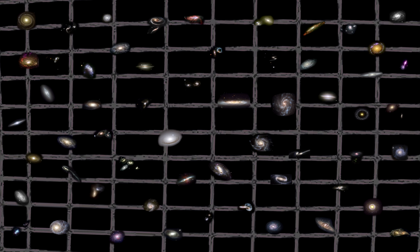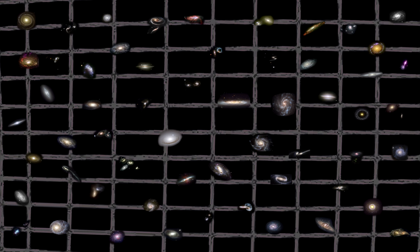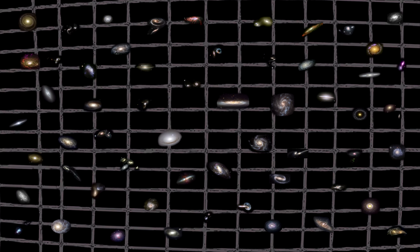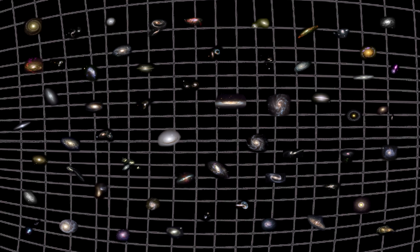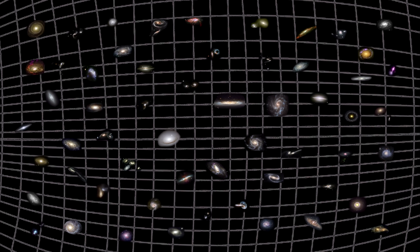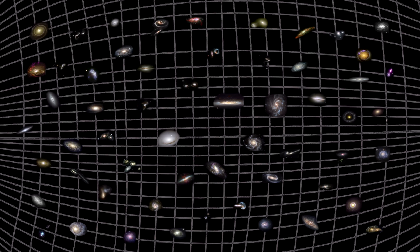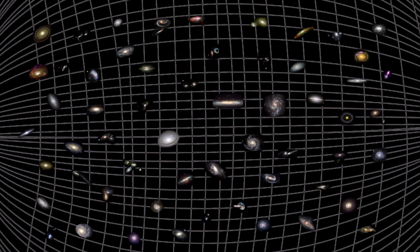But if the universe is large enough, say with a radius of curvature at around 200 billion light-years, it is possible for it to look flat to us, examining such a small part of it. So, it is still possible that we live in a three-dimensional sphere with a huge radius of curvature.